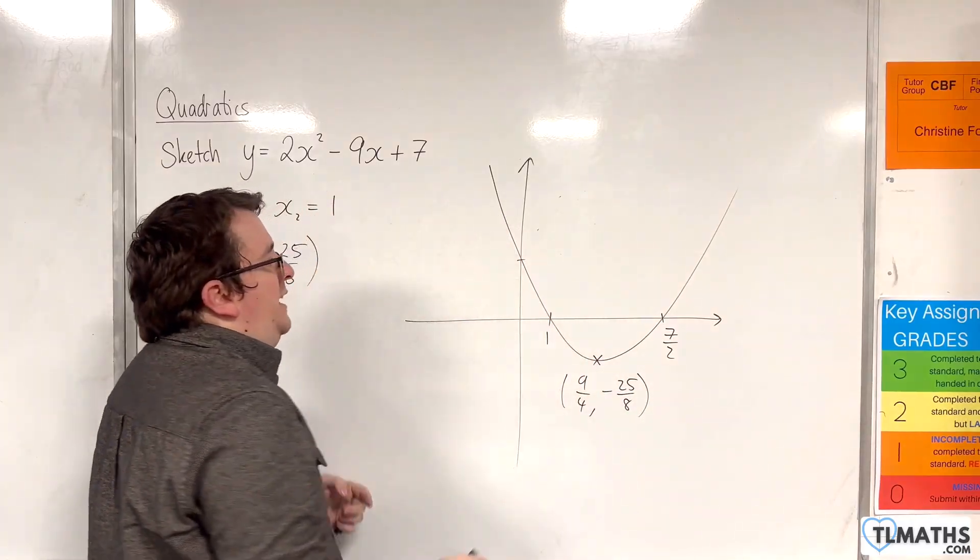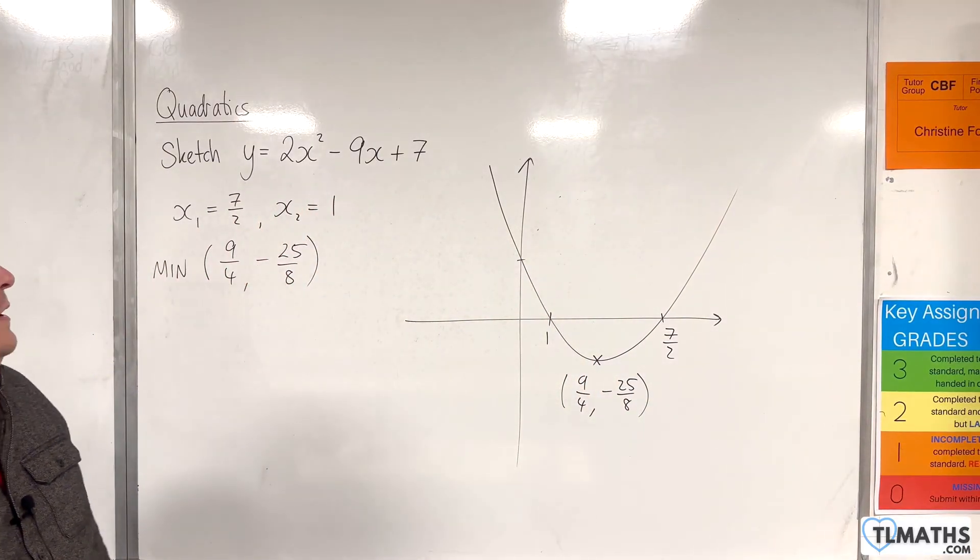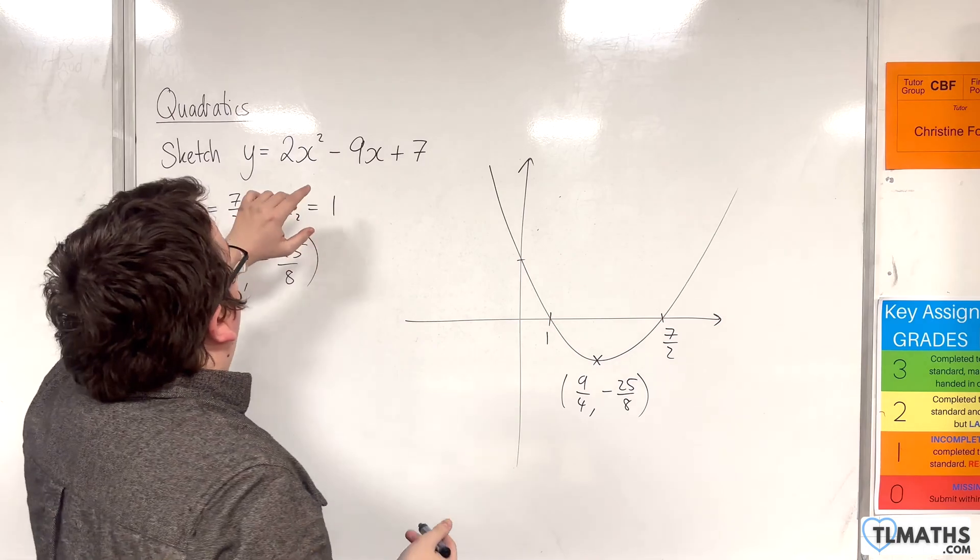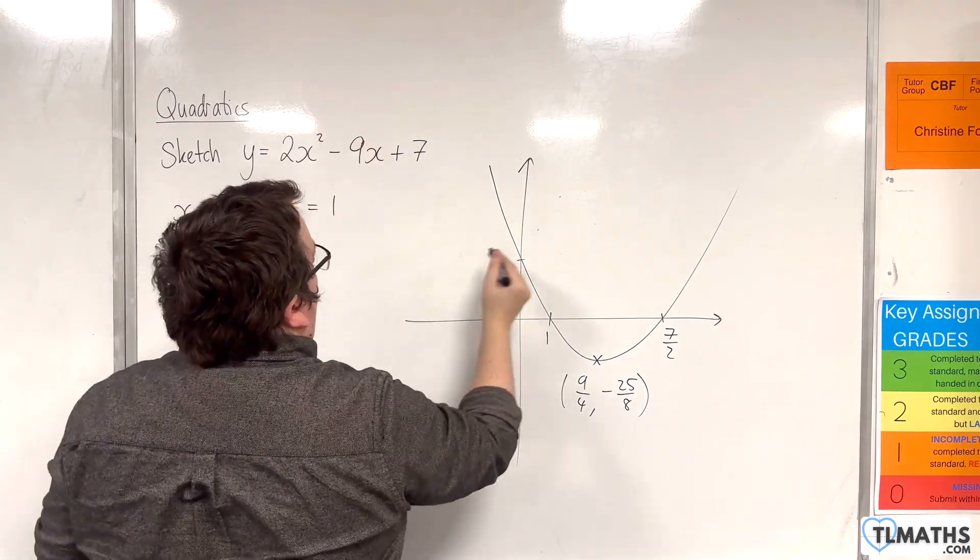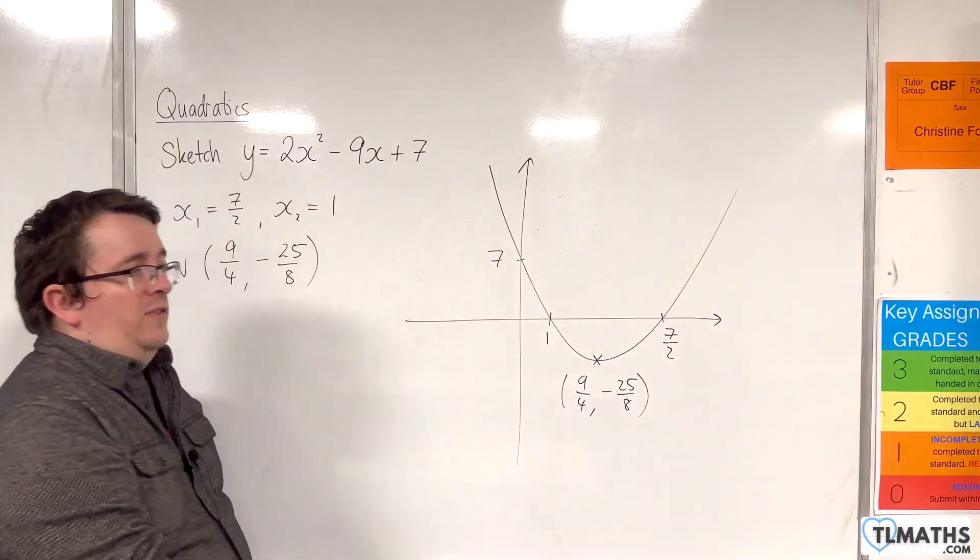And the last point of interest is where it crosses the y axis. Which will be when x is 0. When x is 0 we get y equals 7. And so that is the last piece of the puzzle.